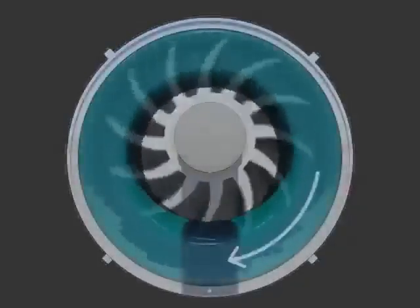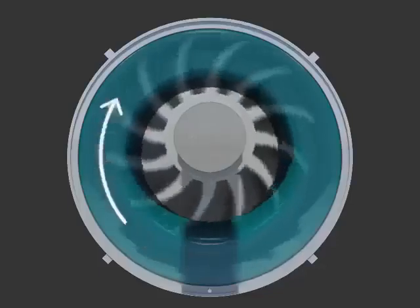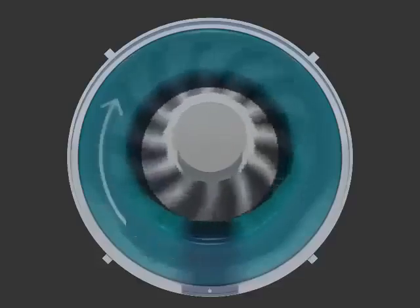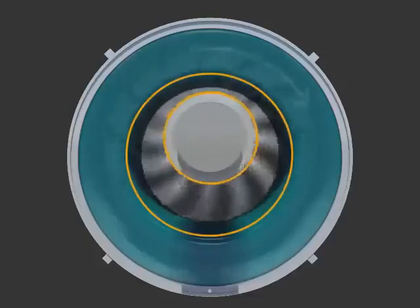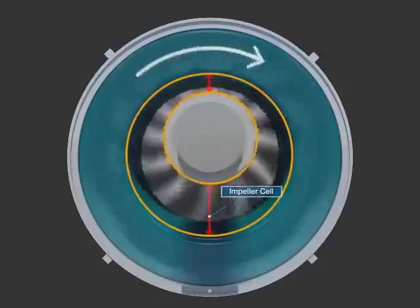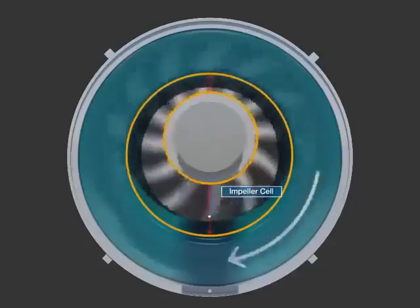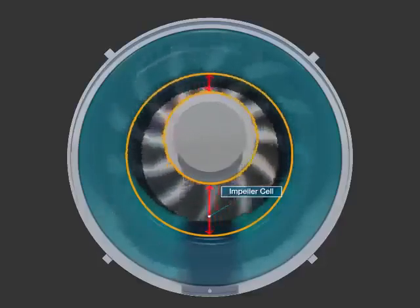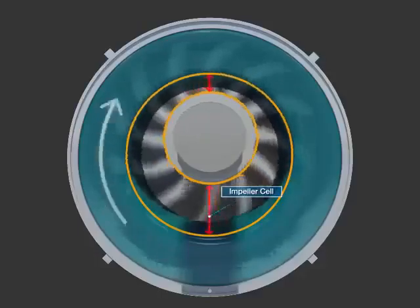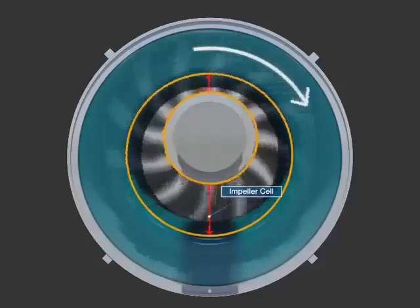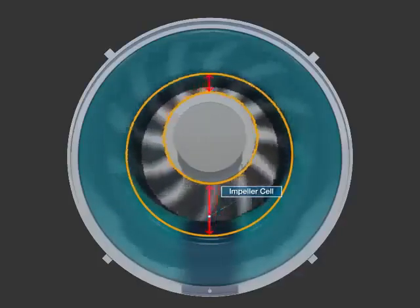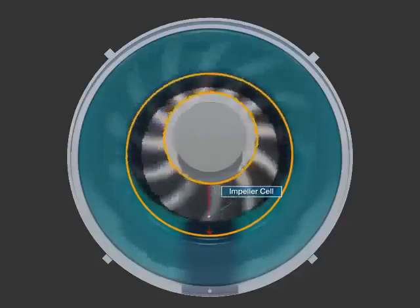The impeller spins at the speed of 495 rpm and the seal water becomes the form of a liquid ring because of the centrifugal force. The liquid ring, caused by the circulation of the impeller, creates a capacity differentiation between the impeller and the inner wall because the impeller is located at a biased position inside the casing.